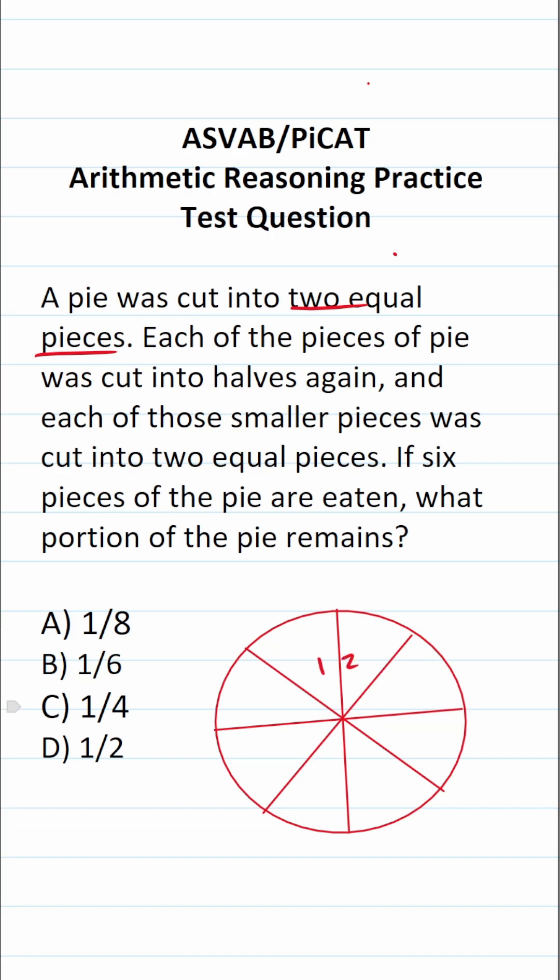this pie has one, two, three, four, five, six, seven, eight equal pieces. So the pie itself is eight out of eight. That represents eight out of eight slices of pie.